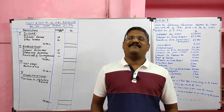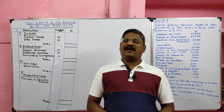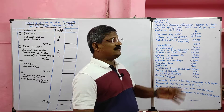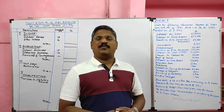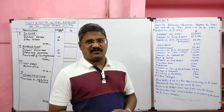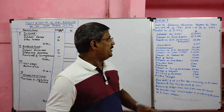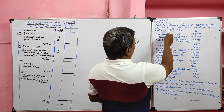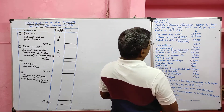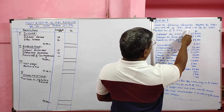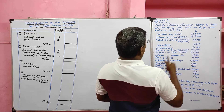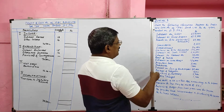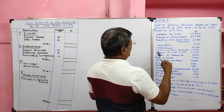Students, we are learning final accounts of a banking company today. We are going to solve the third problem in relation to profit and loss account of ABC Bank Limited for the year ending 31st March 1992.